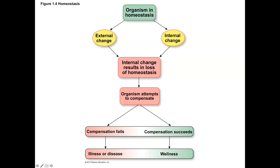If we look at this flow chart, organisms that are in homeostasis experience some sort of change — whether it's an external or internal change — that causes us to lose homeostasis, and then the organism has to compensate for that. If we compensate properly, we stay well. If we don't compensate properly, then we get illness or disease, which is what we call pathophysiology.